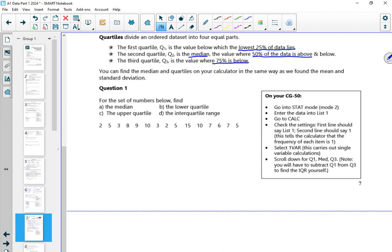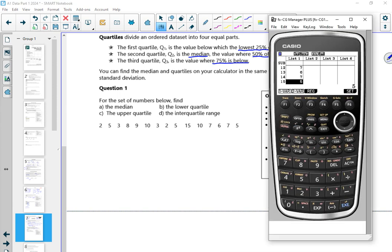Okay, so on my calculator, if I do the one. Now, just double check. If I had ones in list two, then I'd want it as list one, list two. But because I haven't, I've got it on list one, one. So list one, one is fine for just the numbers. But if you've got it list one, list two, you want the frequency in there as well.